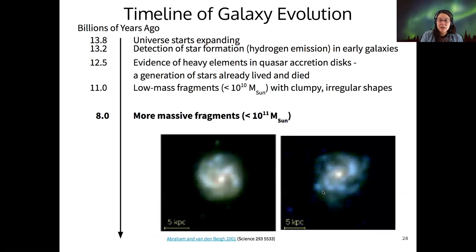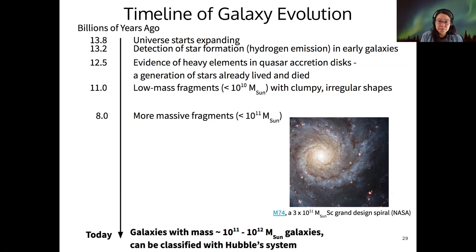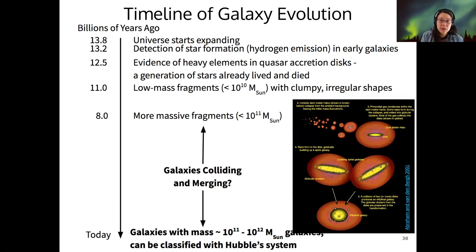To get from those fragments to the modern galaxies that we see, the primary theory for how this occurred is that galaxies collide and merge to go from small, less orderly galaxies to larger, more ordered shapes. This is the essential idea, and I want to break it down and look at some of the observational evidence that supports this.